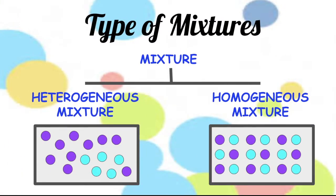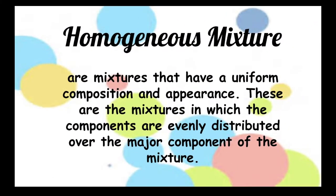Mixtures have two different types. We have heterogeneous mixtures and homogeneous mixture. Homogeneous mixtures are mixtures that have a uniform composition and appearance. These are the mixtures in which the components are evenly distributed over the major components of the mixture. A homogeneous mixture is a mixture that is well mixed. It's so well mixed that you can't see the different parts of the mixture.